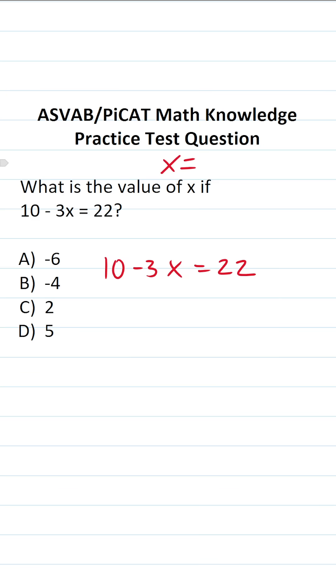In this case, we want to solve this equation for x. That is to say, we want to get x by itself. So the first thing I'm going to do is subtract 10 from both sides of the equation.